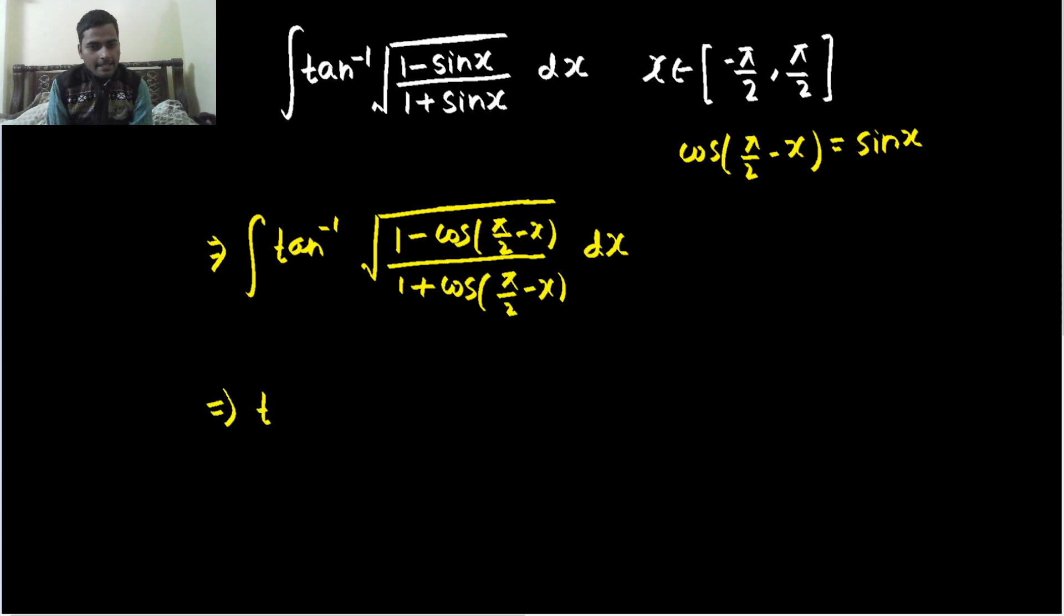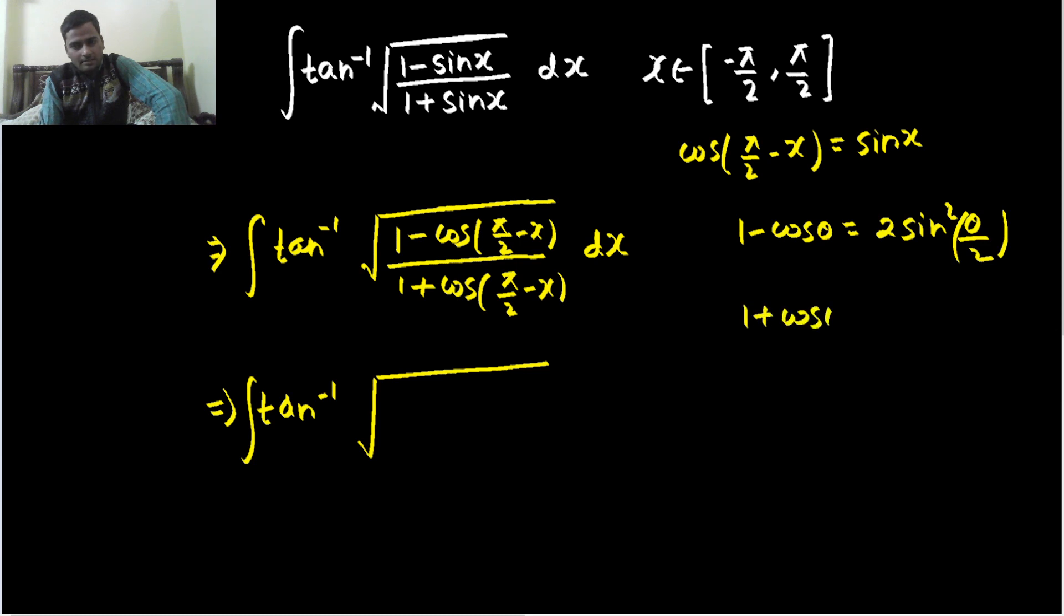Inside the integral, inside tan inverse we have a root. Now 1 minus cos θ equals 2 sine squared(θ/2), and if I talk about 1 plus cos θ, I get 2 cos squared(θ/2). So theta by 2, when I talk, that will be half of this bracket.